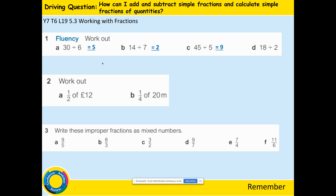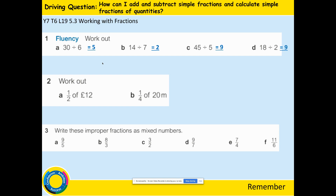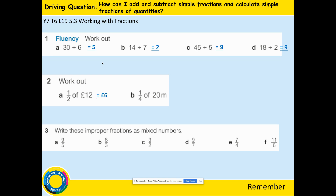45 divided by 5 is 9. 9 times 5 is 45. 18 divided by 2 is 9. 9 times 2 is 18. Check with the inverse operation. To find half of 12 we divide by 2, so half of 12 is 6. Inverse operation: 6 times 2 is 12.